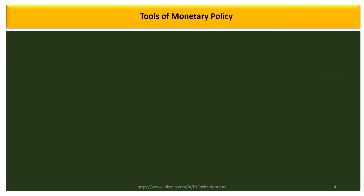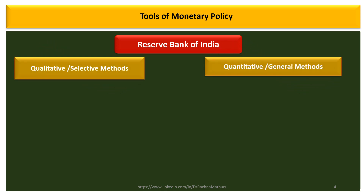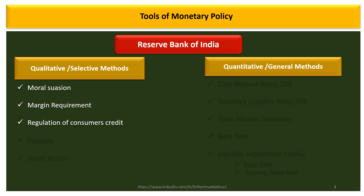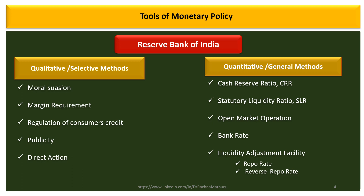To achieve these targets, monetary policy has its tools: the selective method and the general method. Selective method tools are moral suasion, margin requirement, regulation of consumer credit, publicity, and direct action. The general method tools are cash reserve ratio, statutory liquidity ratio, open market operations, bank rate, and the liquidity adjustment facility, which includes repo and reverse repo.